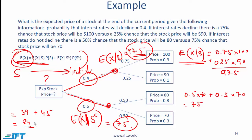This problem could also have been solved by calculating the probability of each terminal node directly: 0.3 is simply 0.4 times 0.75, and 0.1 is 0.4 times 0.25, and so on. You could get the expected value of the stock price by saying 0.3 times 100, plus 0.1 times 90, plus 0.3 times 80, plus 0.3 times 70.